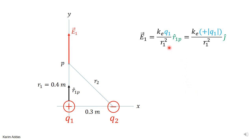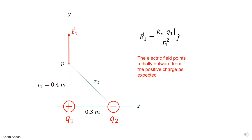Writing out the quantities, q1 is a positive charge so I write it as plus the magnitude of q1. Substituting, the electric field due to charge 1 at point P is ke times |q1| over r1 squared in the j-hat direction. It points in the j-hat direction, as expected, because the electric field due to a positive charge points radially outward. The correct sign comes out automatically — you don't need to put it in yourself.